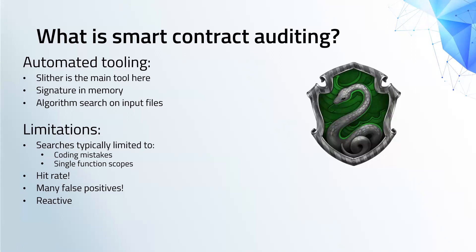Starting off with automated approaches, Slither is really the main tool we see used on the EVM side. We can code up a bug signature and run an algorithm to search for it on Solidity files. This is really the most limited form of audit — bug searches are typically confined to simple coding mistakes and single function scopes. The hit rate for finding bugs is also fairly limited, so even if a bug is there, it can be missed. In the past, teams have run these tools and thought they were safe, and unfortunately that's not always been the case.